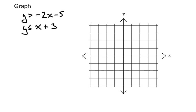Let's look at this first example where we have y is greater than negative 2x minus 5 and y is less than or equal to x plus 3.